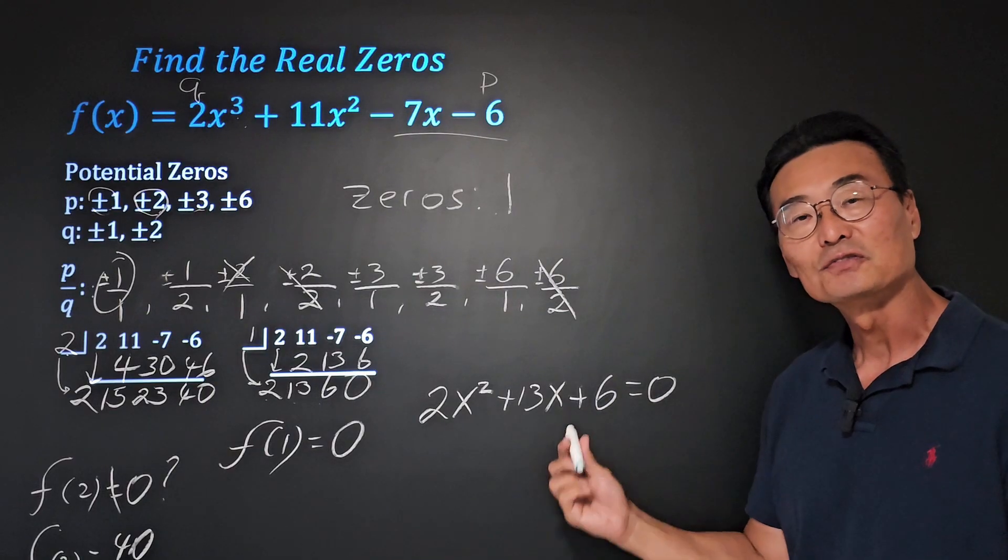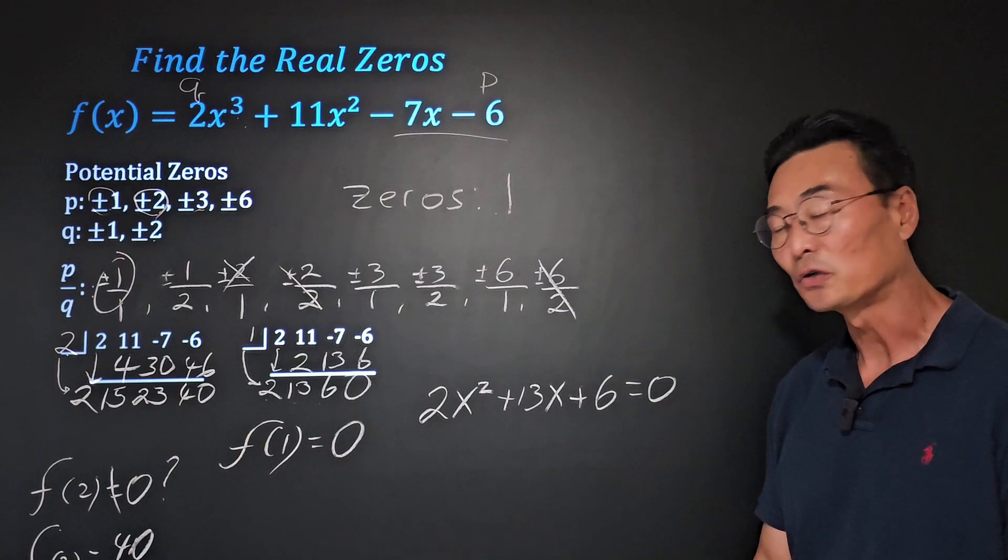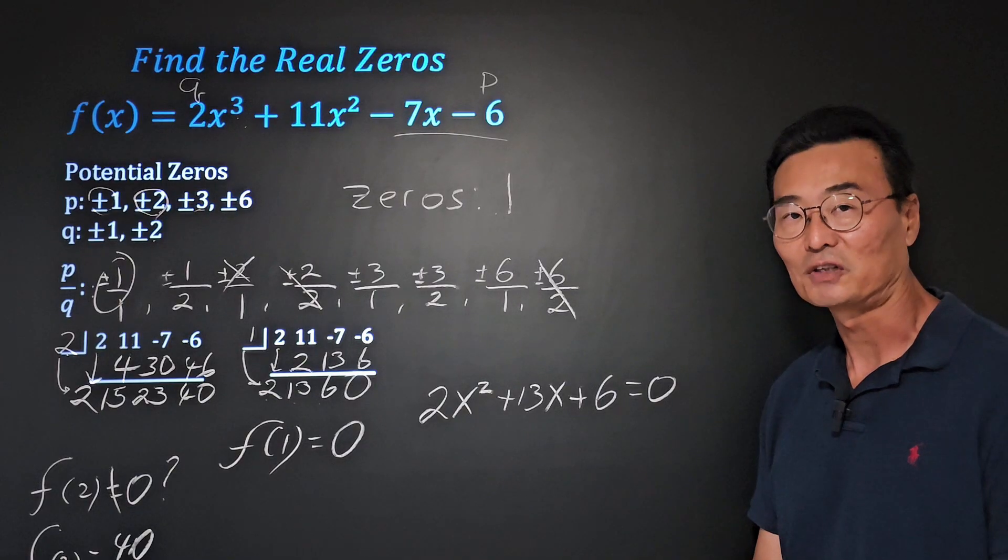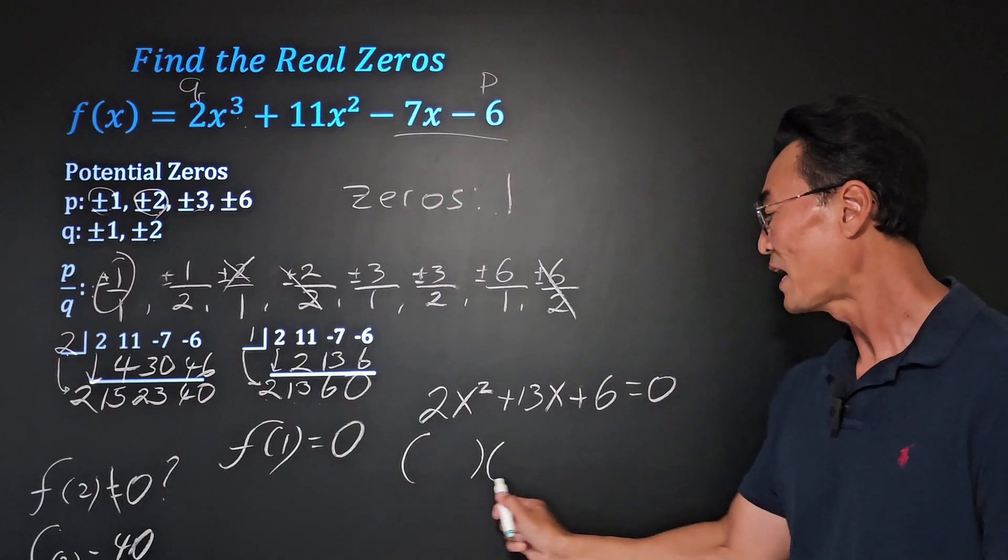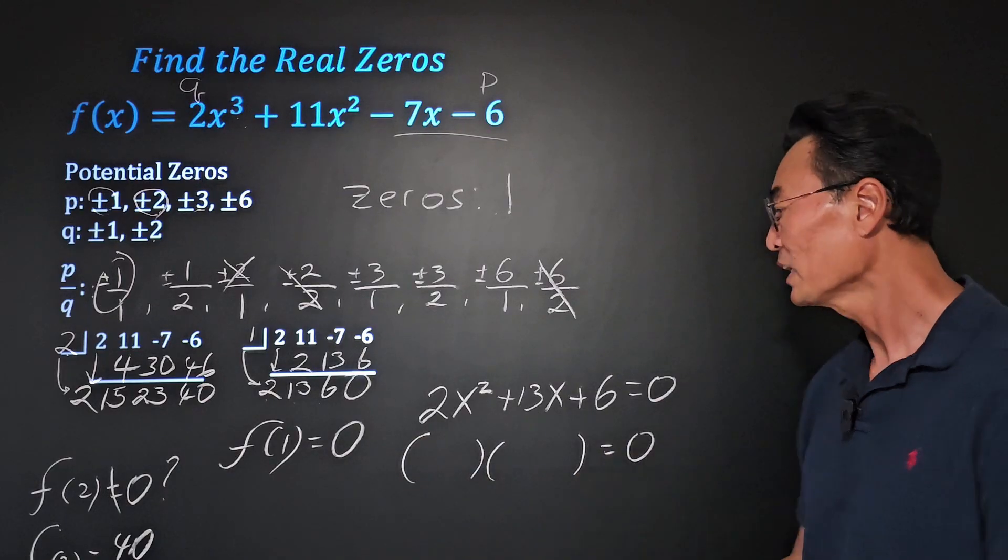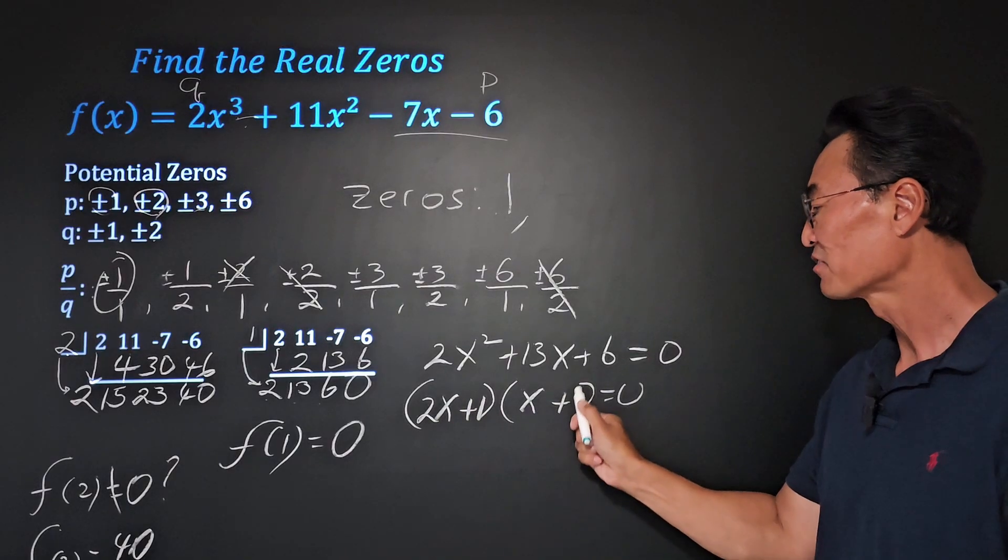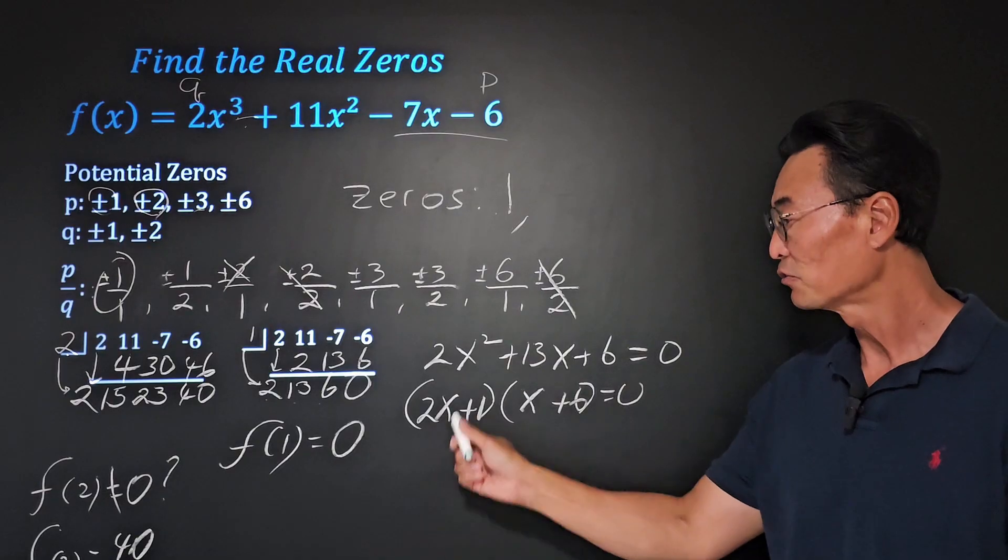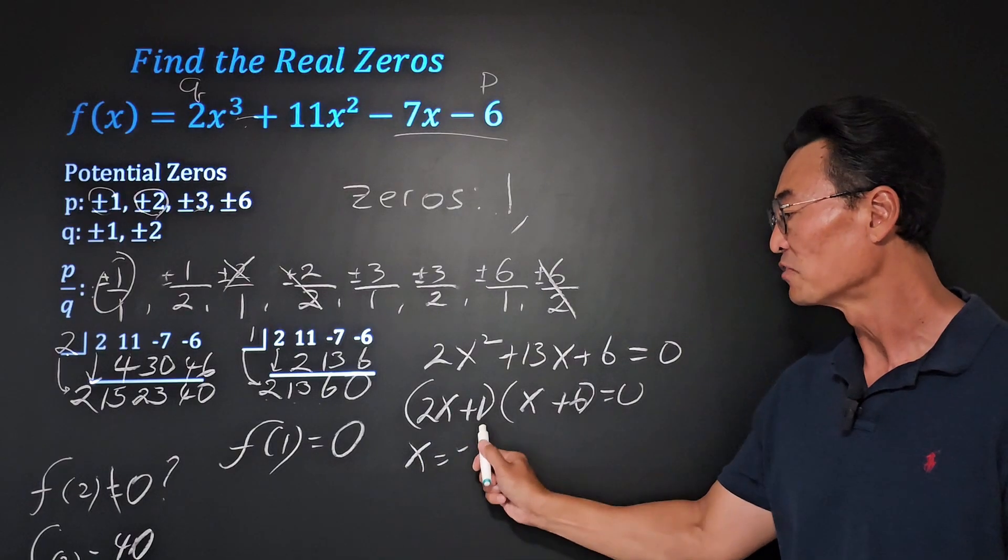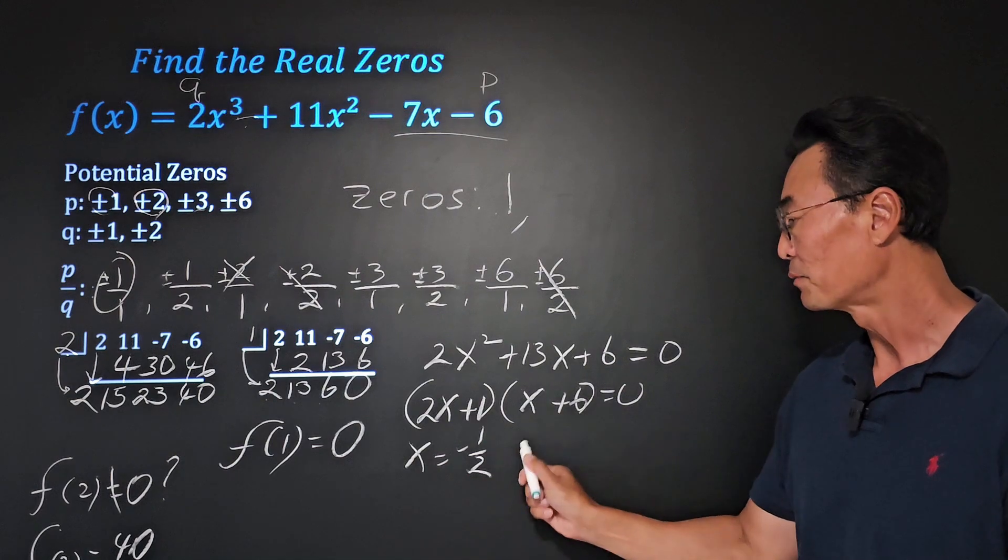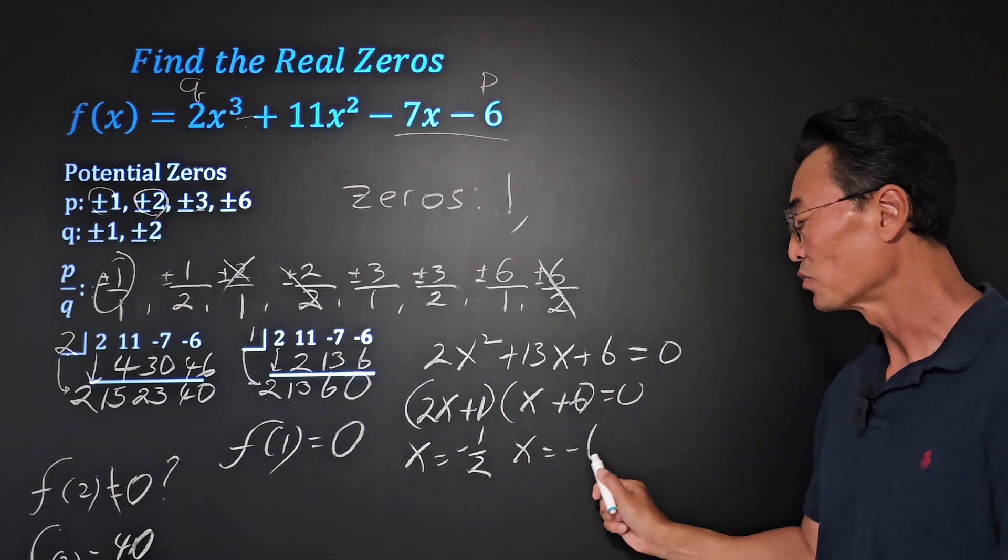And then to find the x or the zero of this equation or the function, we're going to be factoring this. We get 2x plus 1 and x plus 6. So from here, we get x equals negative 1 half, and from here we get x equals negative 6.